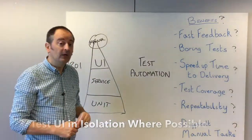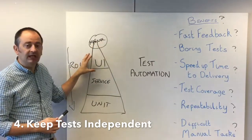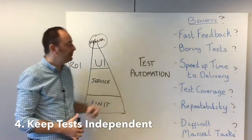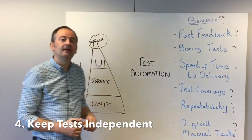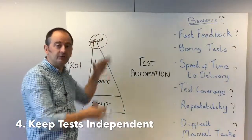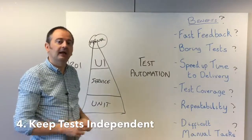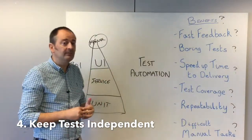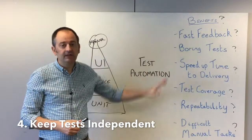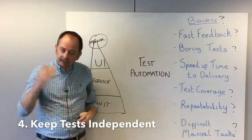Alongside isolation, let's keep all our tests independent as well. This is a good principle for all test automation, but particularly at the UI level. We don't want tests that depend on running through a specific sequence of activities — always running test one, then two, then three. Create independent tests so we can run them at any particular time and check specific aspects of functionality without losing the benefits we're trying to gain: fast feedback, repeatable tests, and so on.